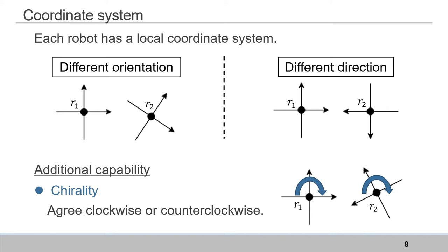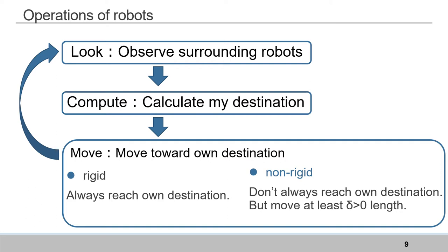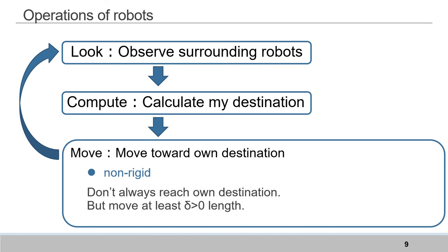Robots execute three operations in a cycle. In the look operation, it observes surrounding robots. In the compute operation, it calculates its destination based on observed information. Finally, in the move operation, it moves to its destination. The robot's movement has two types. Rigid means that robots always reach their destination. On the other hand, non-rigid means that robots don't always reach their destination, but they can move at least delta, which is a value greater than zero — and its value is unknown to them. In this research, we only consider non-rigid movement.